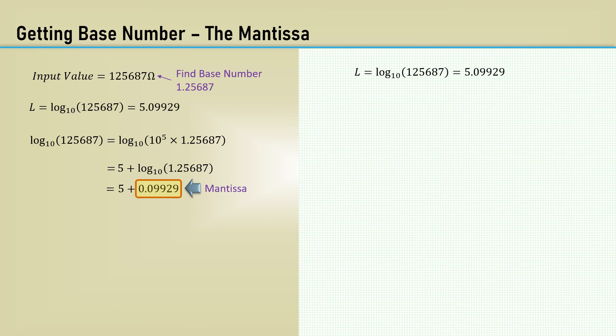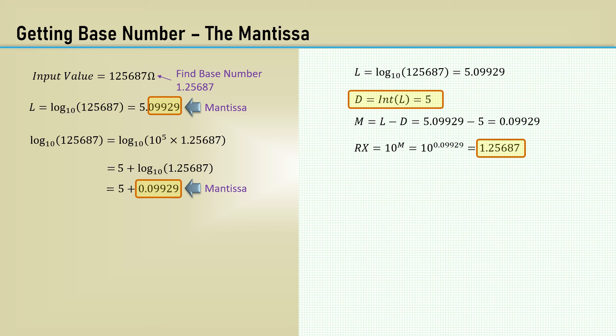Let's compute the base number by first taking the log of 125,687 and assign it to the variable L. We will make D the integer of L, which is 5. The mantissa M is L minus D, 0.09929. Then RX equals 10 to the M power, which is our desired 1.25687. Once we calculate the closest value in the series, we will use the saved variable D to scale the number back up or down to the original input.